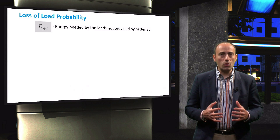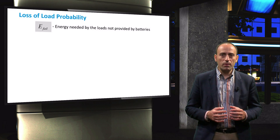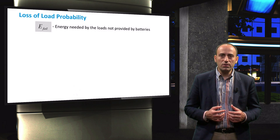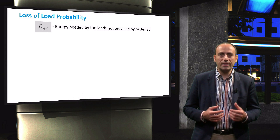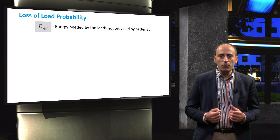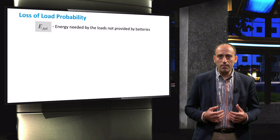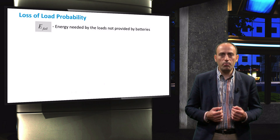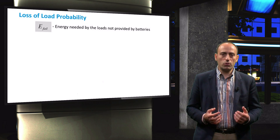Let's first introduce some concepts related to the LLP. The first parameter is E-fail. E-fail is defined as the energy required by the electric load that cannot be delivered by the PV system. This occurs, for example, if there is no energy generation for a period longer than the number of autonomous days.